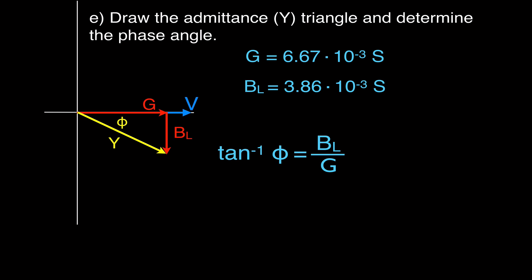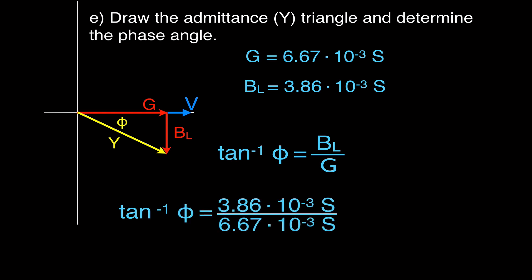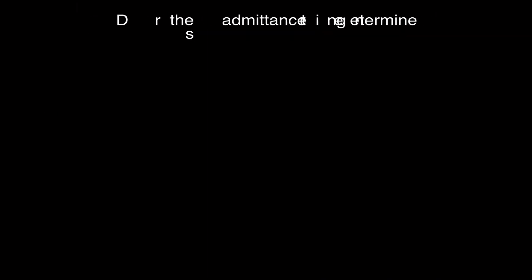We can also get the phase angle using tangent — opposite over adjacent — dividing the inductive susceptance by the conductance, and we get that the angle is 30 degrees. So once again, we're confident that we calculated the previous values correctly because we got 30 degrees both times.